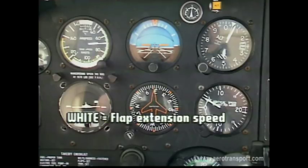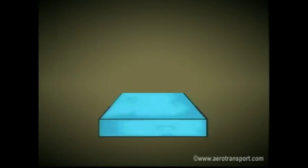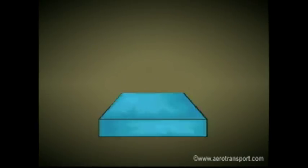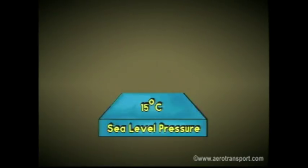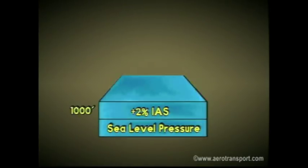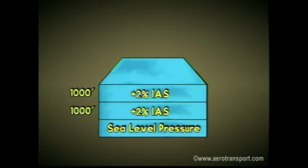Errors in the airspeed readings may be caused by a variety of factors and will have to be corrected. As air density varies, so will the margin of error. The standard for calibrating this instrument is normal sea-level pressure at 15 degrees Celsius. A good rule of thumb to remember is: for every 1,000 feet of pressure altitude, add 2% to the indicated airspeed.